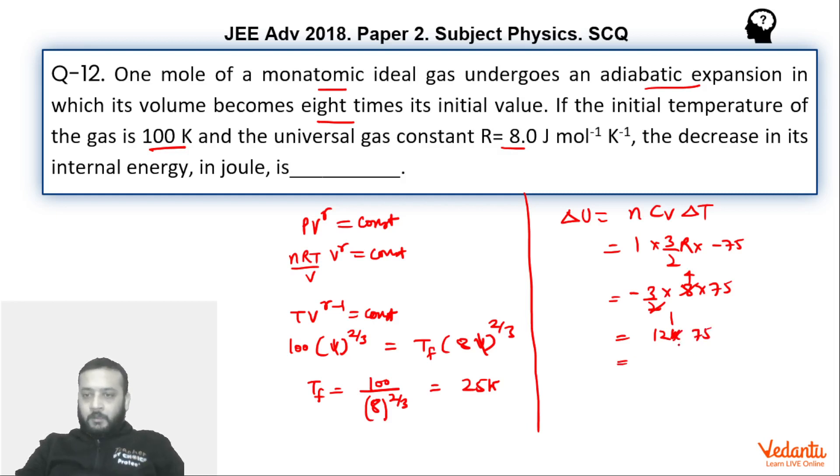This will be – 12 times 5 is 60, 12 times 7 is 84, so 900 – minus 900 joules. The minus sign just indicates that the internal energy has decreased, which was already mentioned in the question.